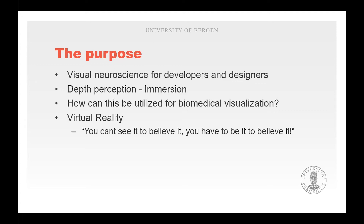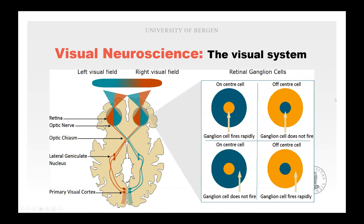We'll start with the visual system. I'll try to be brief as this is probably familiar to most of you. This is a figure illustrating the main components of the visual system, with light entering the eye and interacting with photosensitive receptors in the retina.